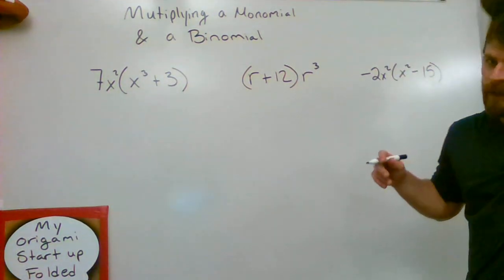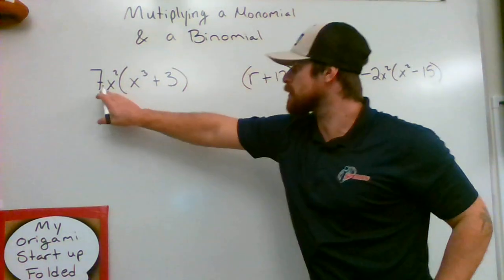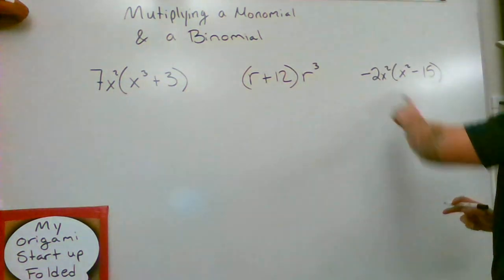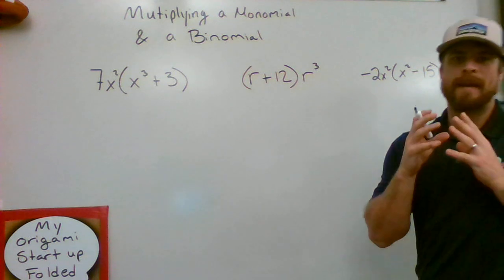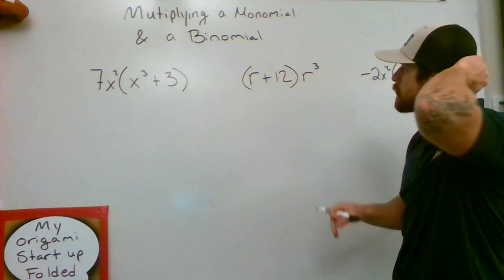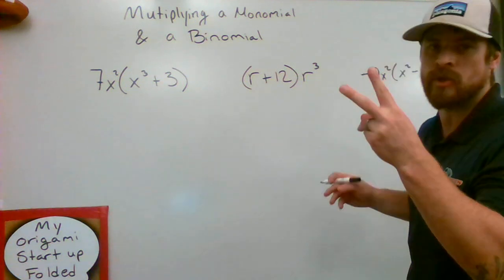Okay, in this video we're going to be multiplying a monomial, which is a singular term. That's the term on the outside of these parentheses that you see on each one of these. And we're going to be multiplying it by a binomial, which is two terms. Just like a bicycle has two wheels, we call binomials polynomials with two terms in them.